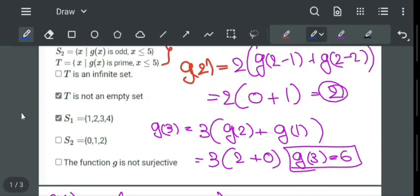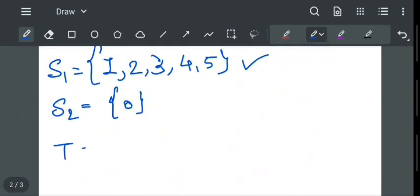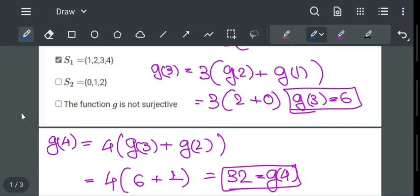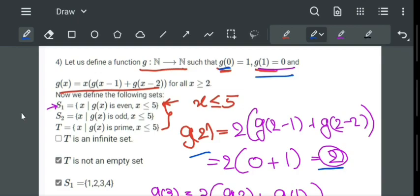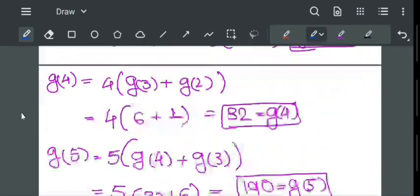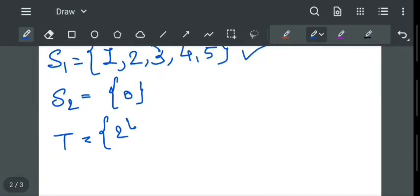Then t, g of x is prime. So t will equal to, at x equal to 2, we get the value 2 which is a prime number. We know that 0 and 1 are not a prime number, so t will be the singleton set 2.